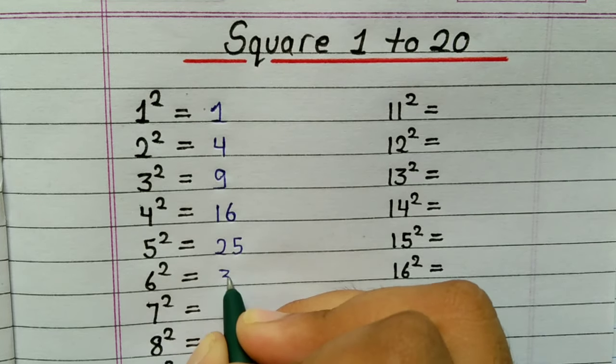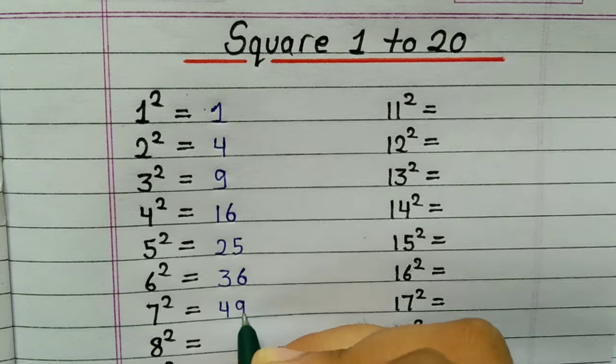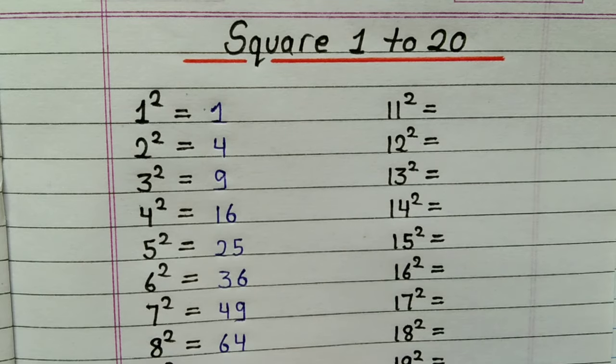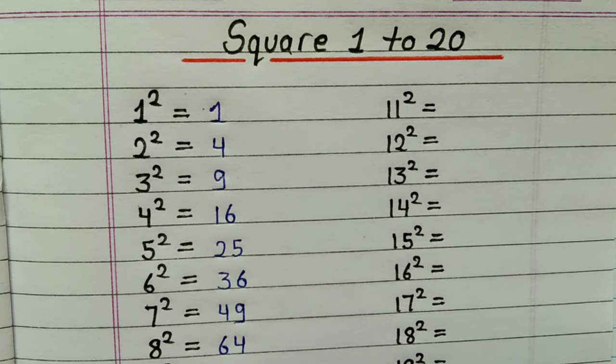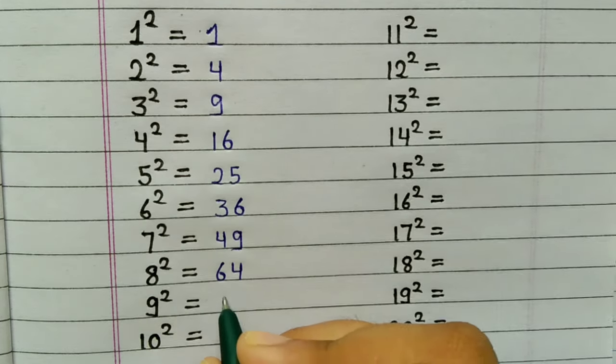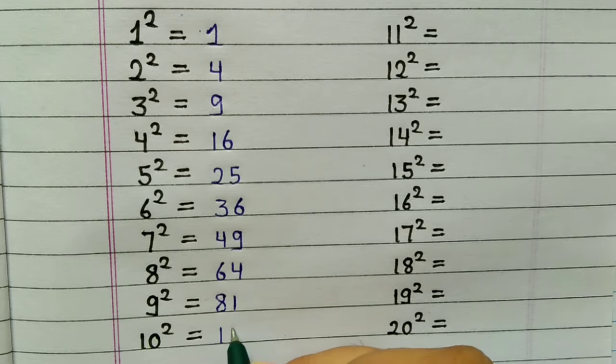6 squared is 36, 7 squared is 49, 8 squared is 64, 9 squared is 81, 10 squared is 100.